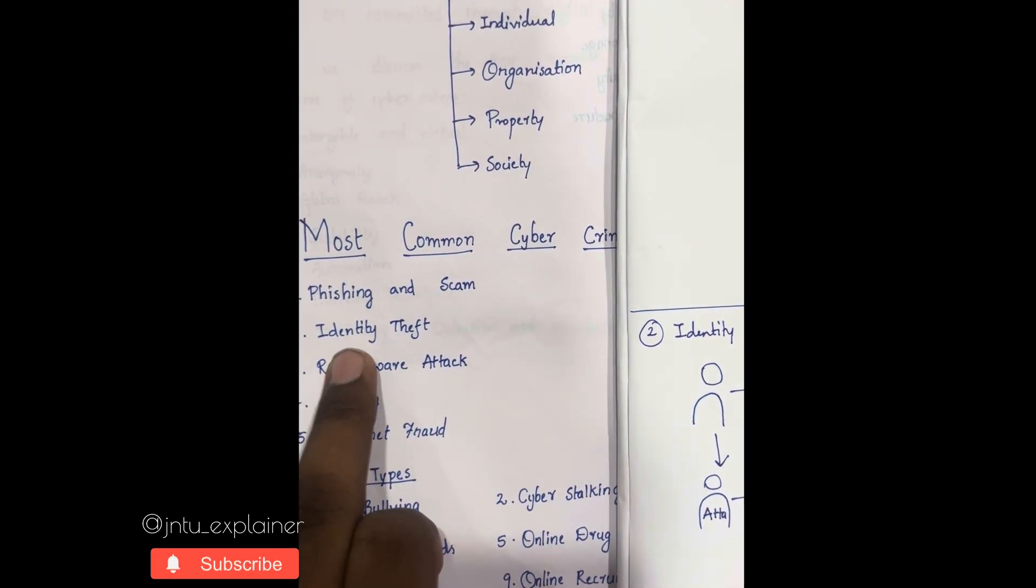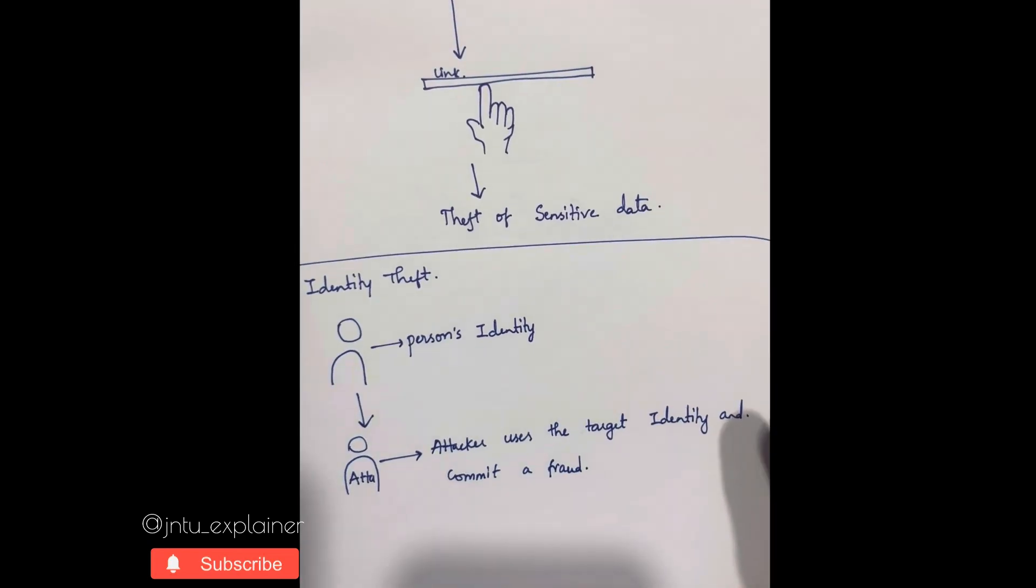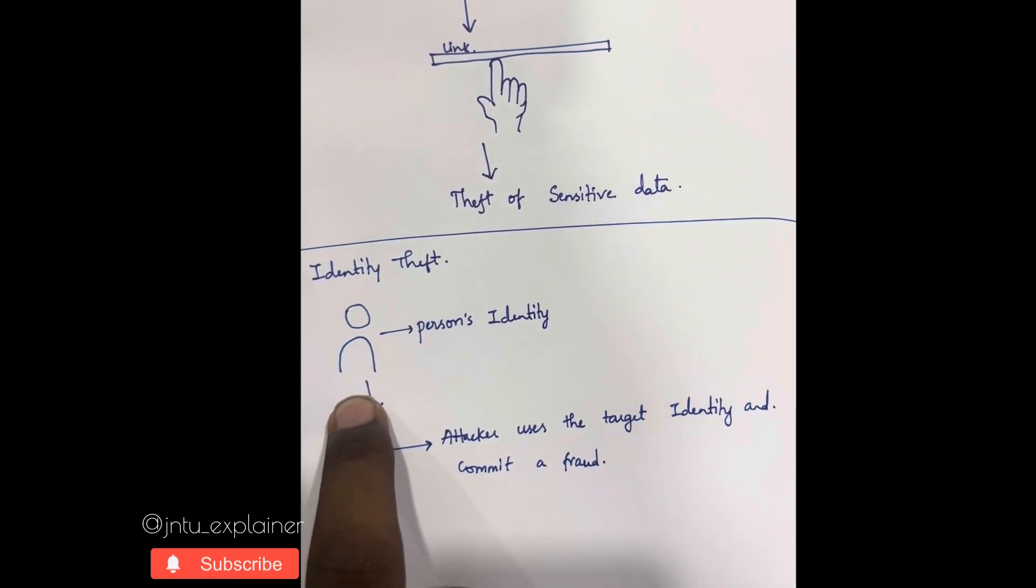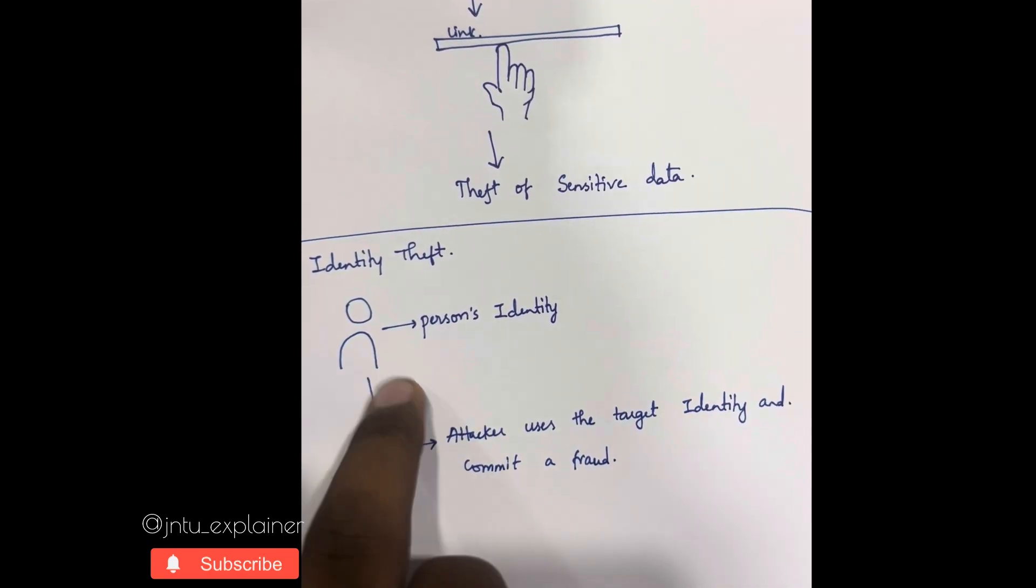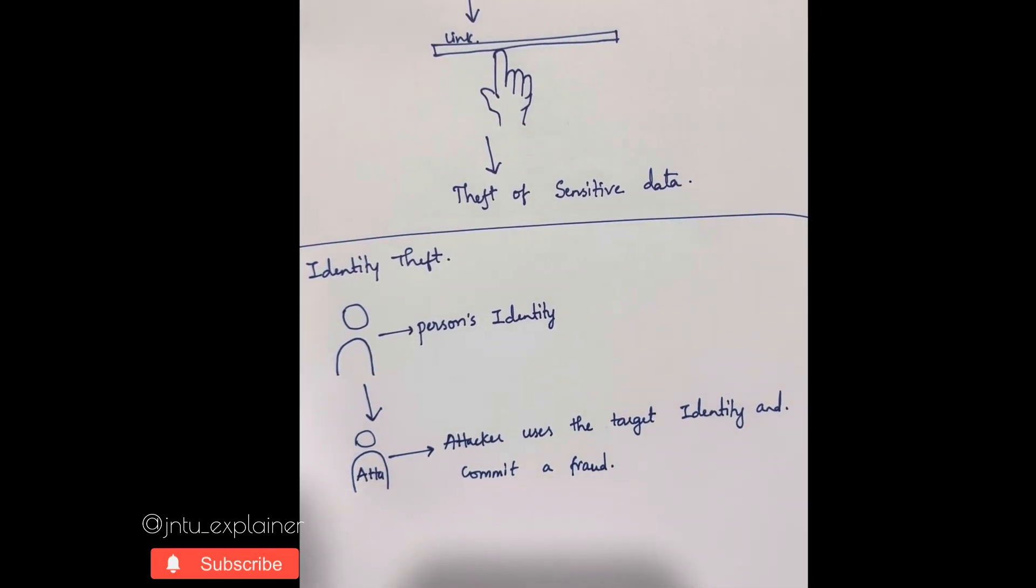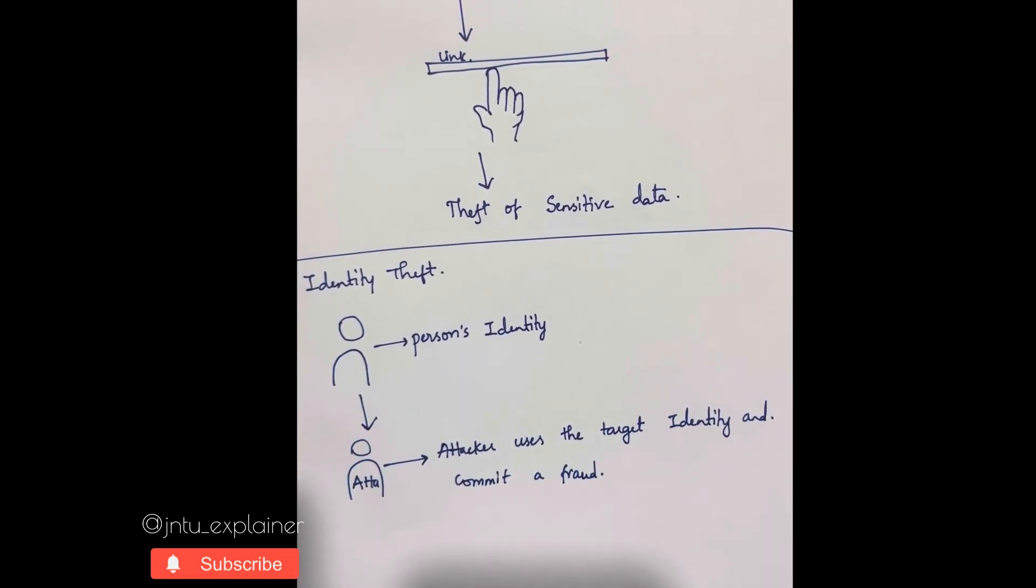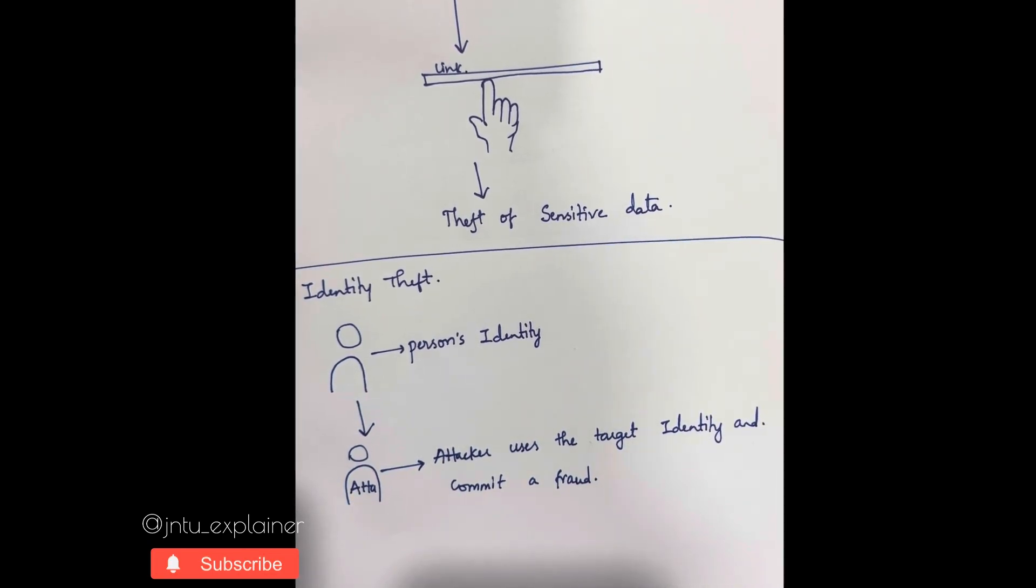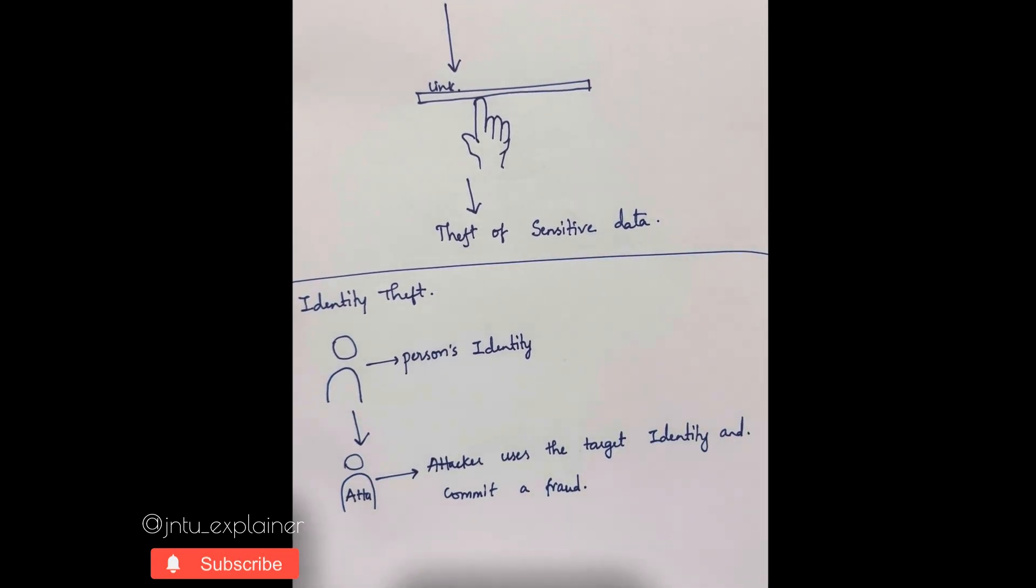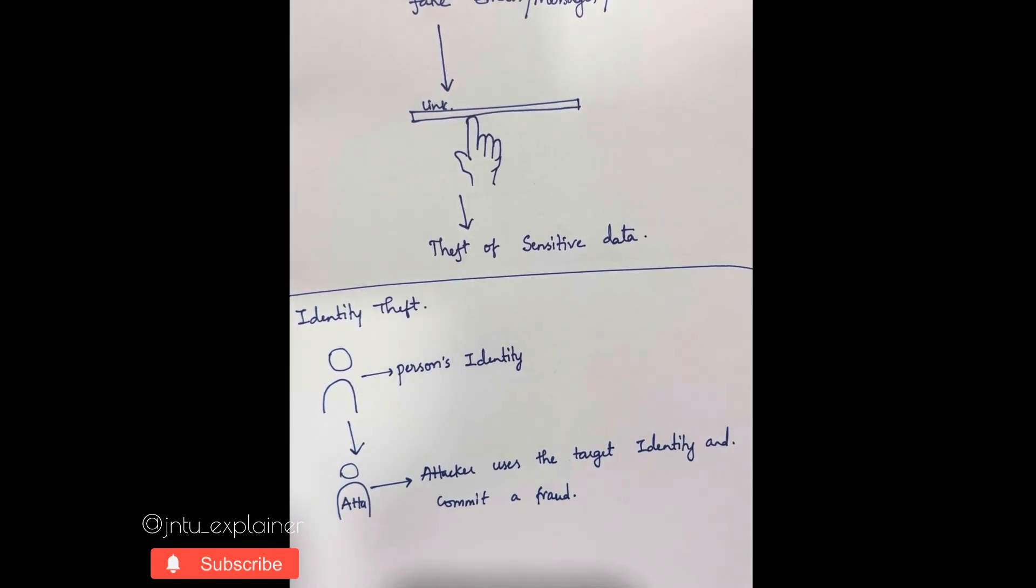The second common cyber crime is identity theft. By using an example, I will try to explain. For example, you are the person with your personal credit card or account. What this attacker does is he uses your credit card, your account details, and commits fraud in your name, which no one doubts. When he is using your information correctly, how will they get the doubt that he is making a fraud? This type of fraud is called identity theft.